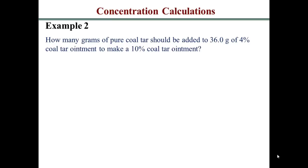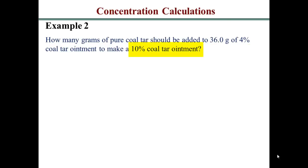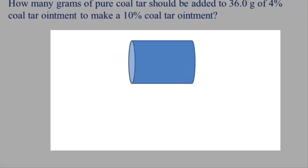That first example was about diluting. This next example is about strengthening your product — making it more concentrated. The question asks: how many grams of pure coaltar should be added to 36 grams of 4% coaltar ointment to make a 10% coaltar ointment? You are jumping from 4% to 10%, which means we need to add a source of coaltar with a higher concentration than 10% to make it more concentrated.